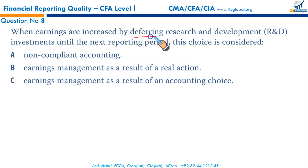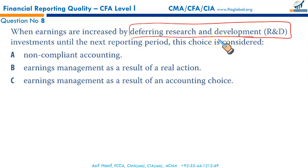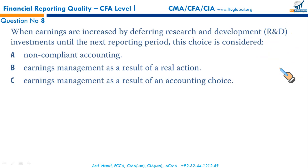When earnings are increased by deferring research and development expenses, the R&D expenses are being delayed — they have not yet been incurred. Under US GAAP, both research and development must be expensed when incurred. Under IFRS, research must be expensed, but development expense can be capitalized if six criteria are met simultaneously. Here, you are simply delaying the expenditure — it hasn't been incurred yet, so no accounting violation has occurred.